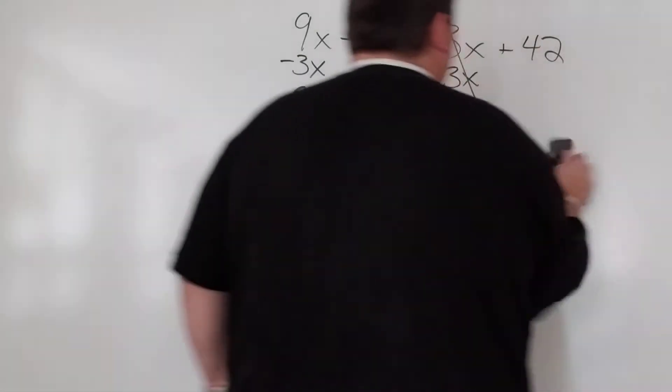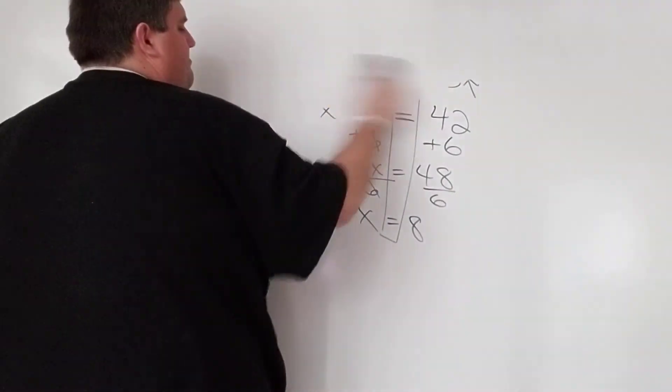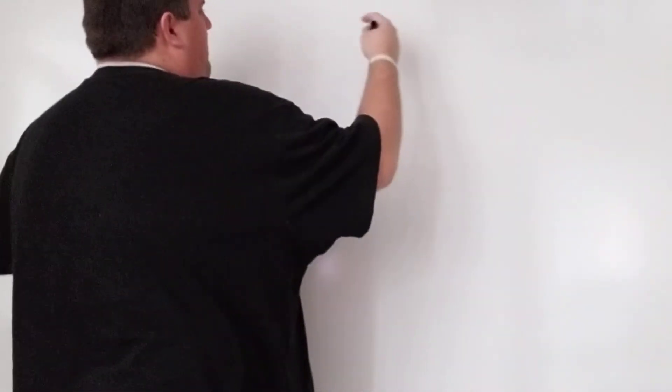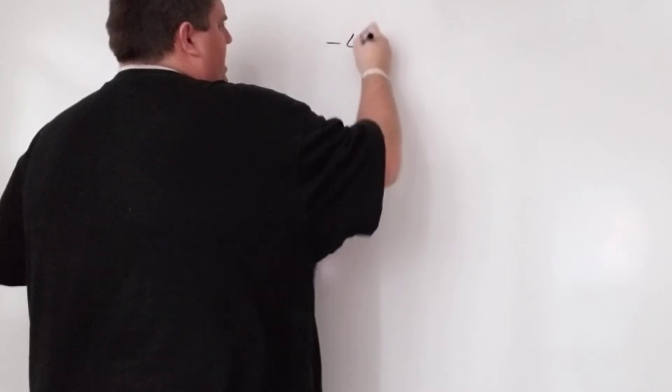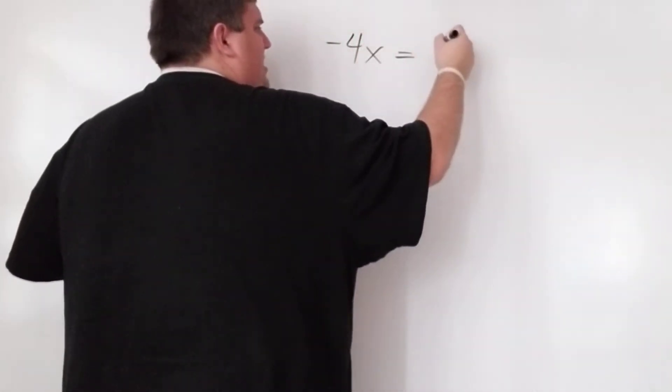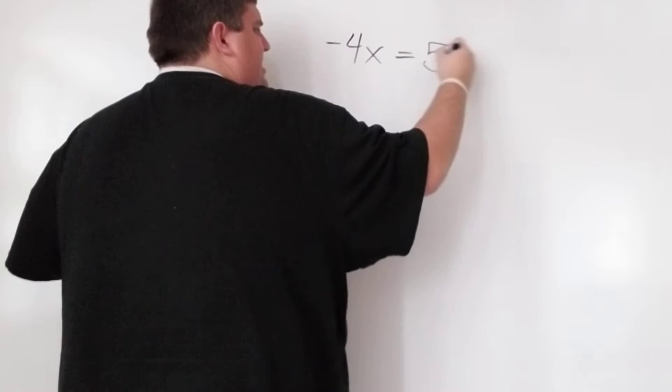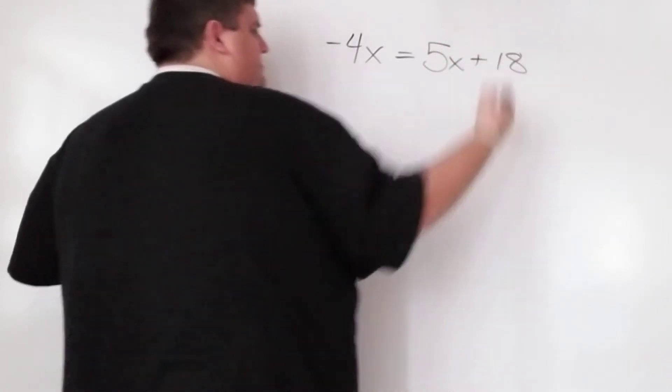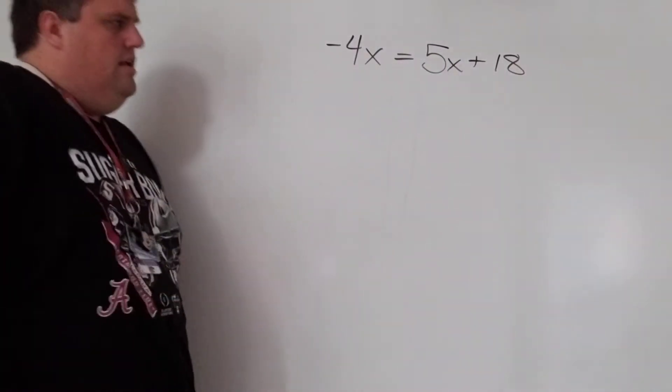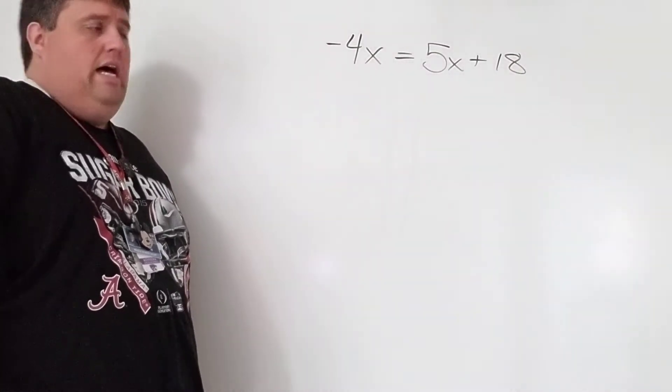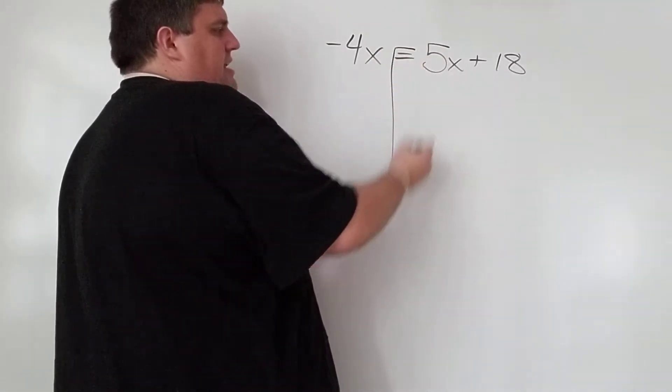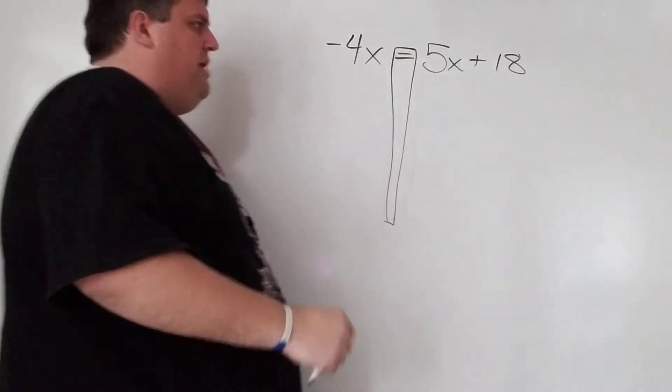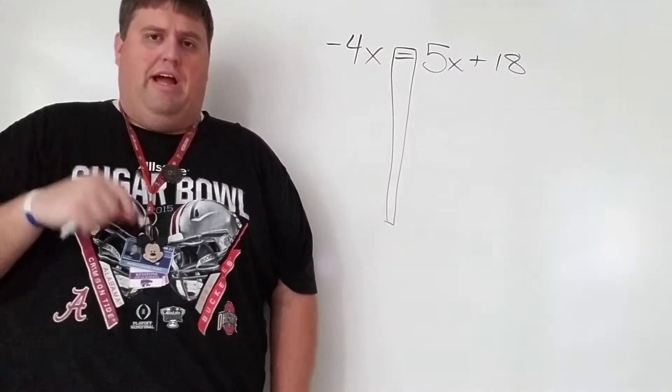Let's say we're not going to go too much farther yet. How about negative 4x equals 5x plus 18. All right. Same idea. I don't have any distributing. I don't have any like terms on the same side. But what I do have is I have variables on both the left and the right side.